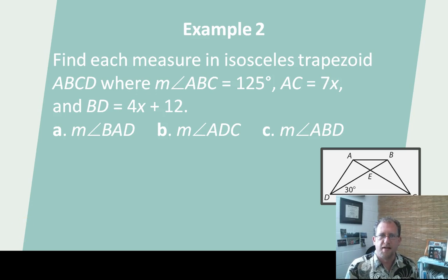Let's do some more work with isosceles trapezoids. ABCD here is given to me as an isosceles trapezoid. In the diagram, I know that this is 30 degrees. In the text, I'm told that this is 125. And I'm given an algebraic definition for the length of the two diagonals. Now they're asking, what's bad? Well, BAD here, this angle, I'm going to tell you is congruent to this angle here. So the answer is 125.